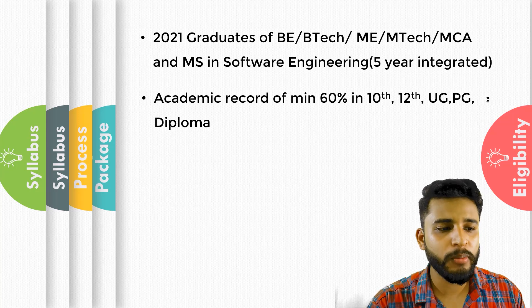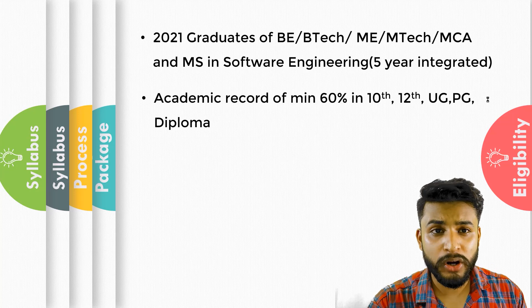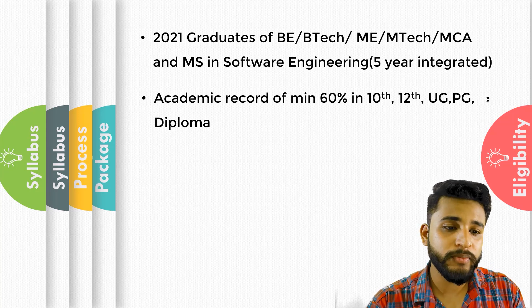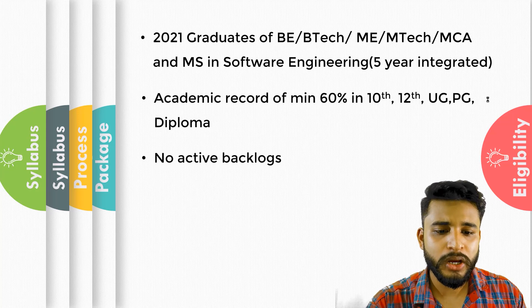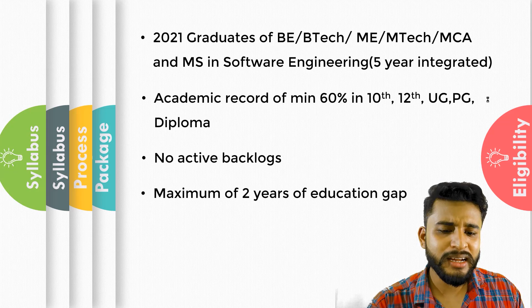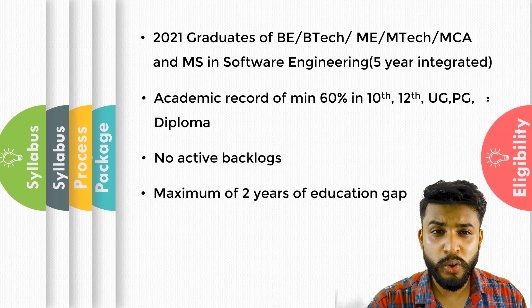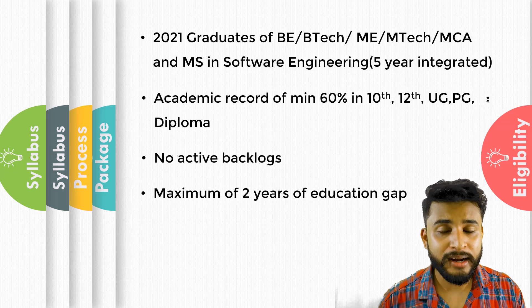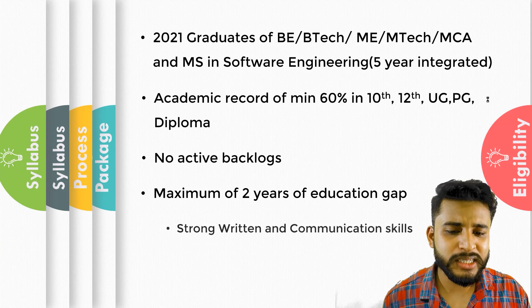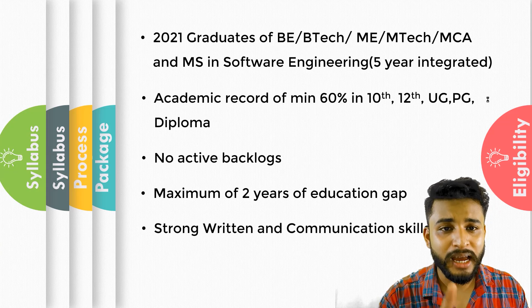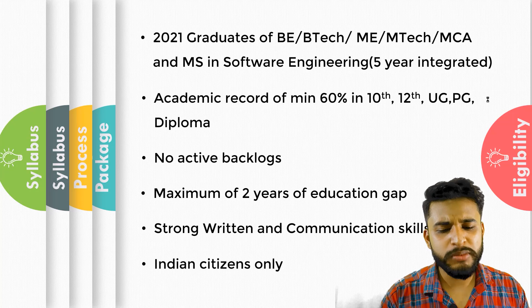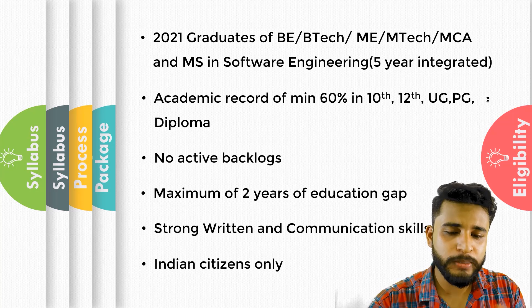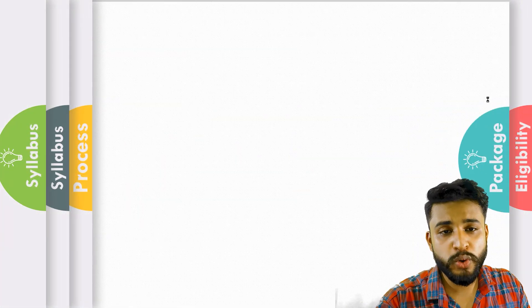If you have done diploma, UG, or 10th and 12th, you must hold a minimum 60% academic record. The next requirement is no active backlogs when going for the selection procedure. Next, a maximum of two years of education gap is allowed — not more than that. Strong communication skills and writing skills are mandatory; they will check these in the procedure itself. You must also be an Indian citizen. This is the basic eligibility criteria.